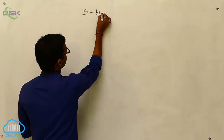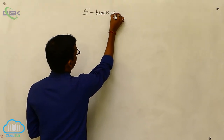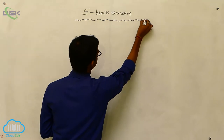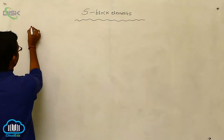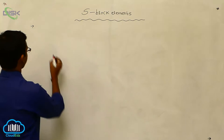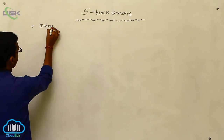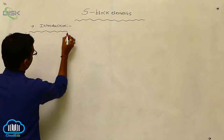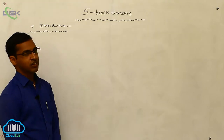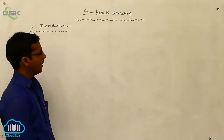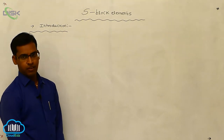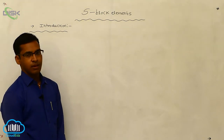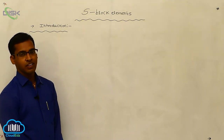In this chapter, we discuss S-block elements. The differentiating electrons are entering into S, P, D, or F orbitals. Based on that, the blocks are classified into four types: S-block elements, P-block elements, D-block elements, and F-block elements.